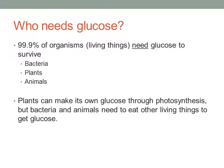Who needs glucose? 99.9% of organisms, or living things, need glucose to survive. That includes bacteria, plants, and animals. Plants can make their own glucose through photosynthesis, but bacteria and animals need to eat other living things to get glucose.